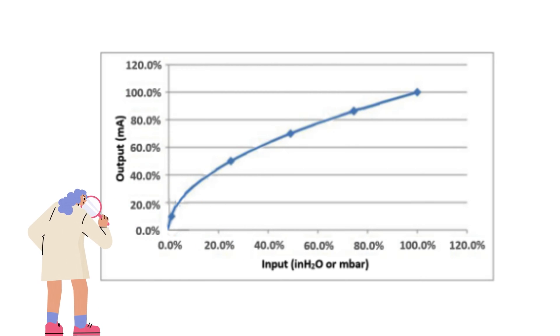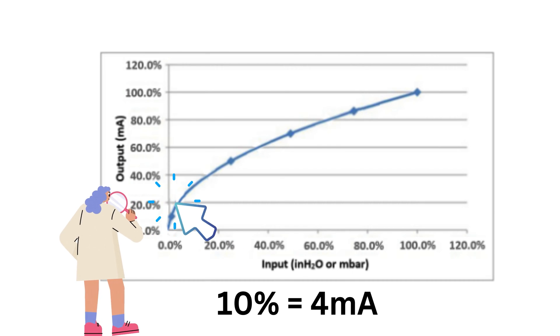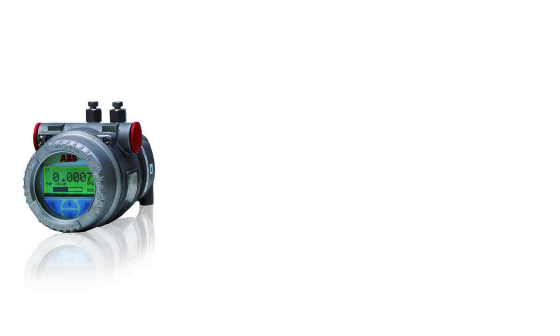Therefore, vendors will define a low flow cutoff for the flow meter. That means that the output signal will be set to 4 mA once the flow drops below 10%. The low flow cutoff is only present in DP transmitters with internal square root extraction.